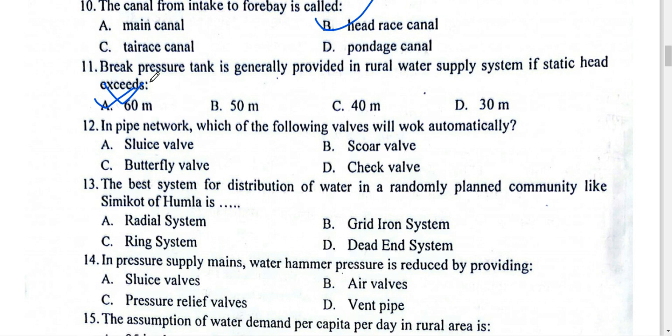In a pipe network, the following valves work automatically: sluice valve, reflux valve (also called non-return valve or check valve). In the same direction, it allows flow. This way it works as a check valve — non-return valve, check valve, reflux valve — and provides backflow prevention.